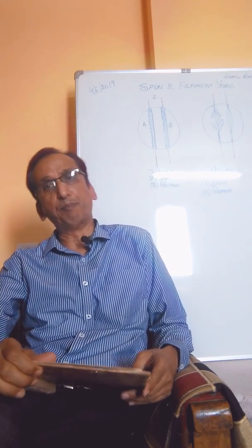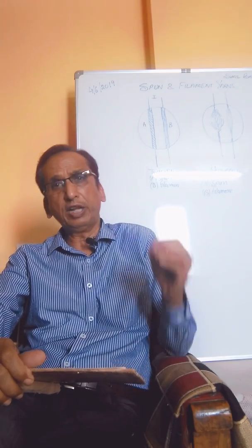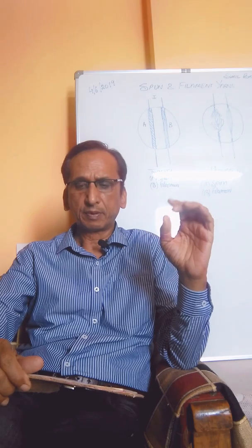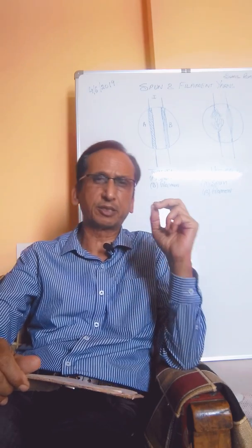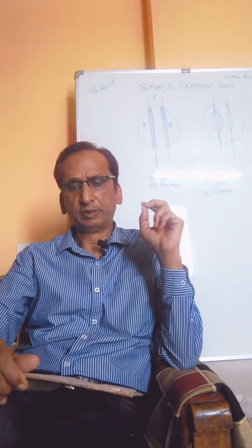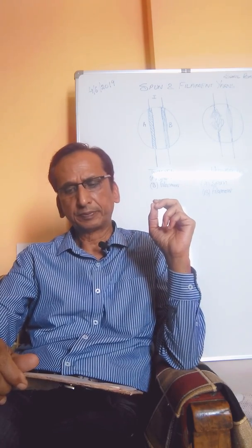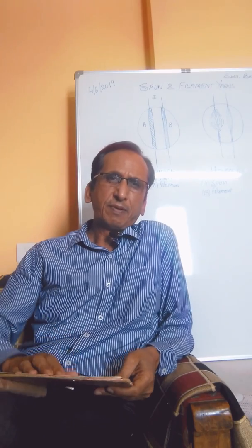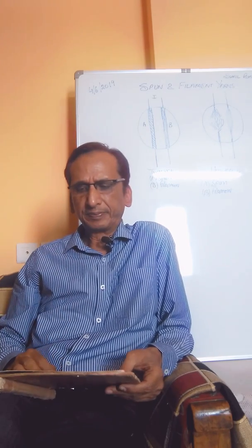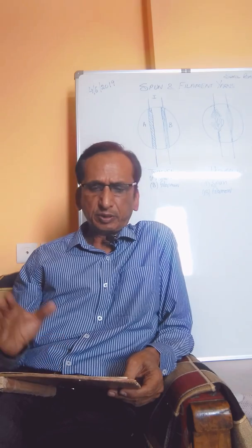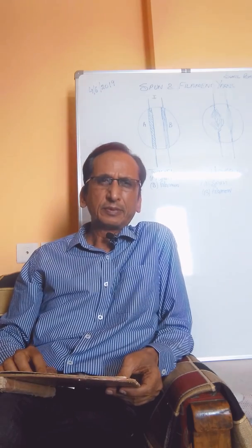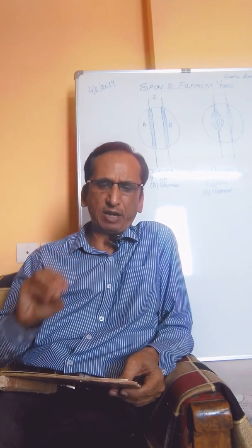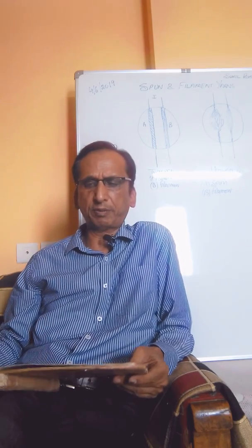Filament yarns are composed only of man-made fibers or natural fibers like silk. Spun yarns, however, consist of both natural and man-made fibers. When man-made filaments are extruded from a spinneret, they can be chopped into short fiber lengths and later processed into spun yarn. These are then called spun nylon, spun rayon, or whatever the generic fiber name is.